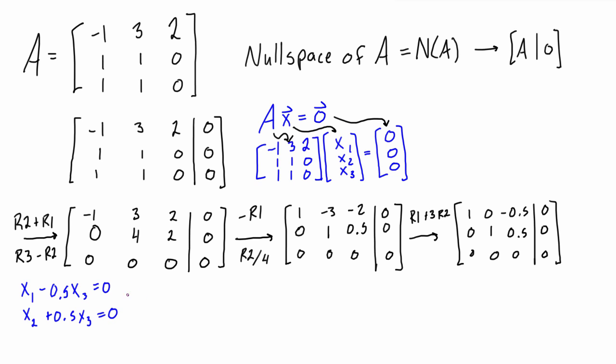So what I like to do at this point is write what each variable is. We have x1 is equal to, if we bring this over to the other side, 0.5 x3, and x2 is equal to, if we bring this over, negative 0.5 x3. And then x3 is just that independent variable, it's just equal to x3.